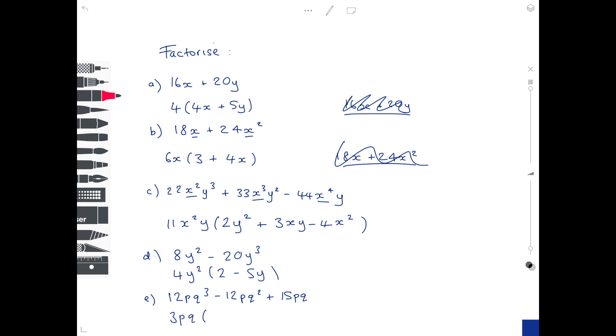How do we get from 3pq to 12p cubed q squared? We multiply 3 by 4 and q by q squared. To get to minus 12pq squared, we multiply by minus 4 and q. To get to 15pq, we multiply by 5. That is your final answer.